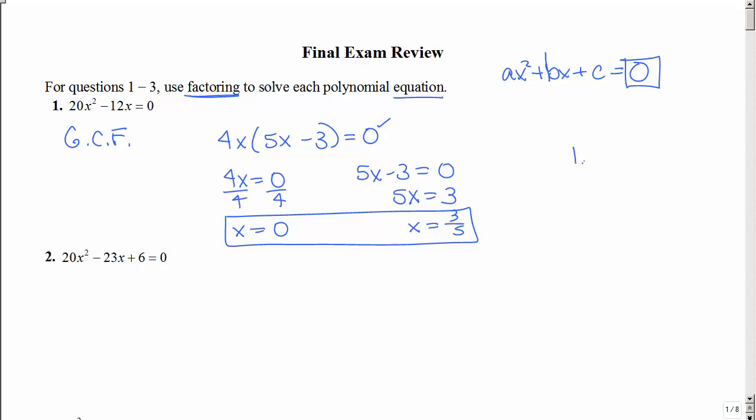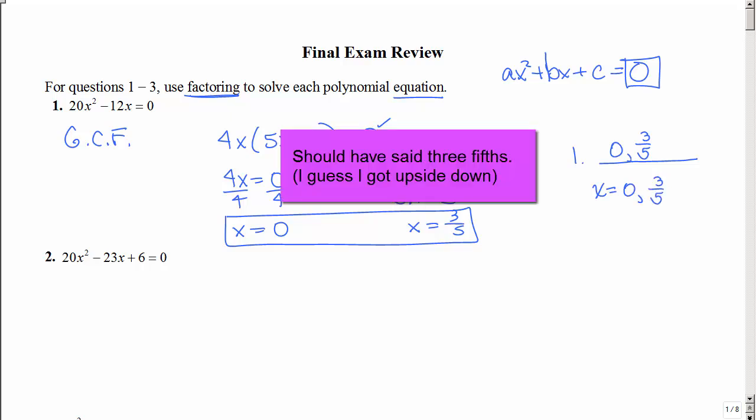On the exam, you will have an answer blank out to the side and you certainly want to make sure that your answers go in that answer blank. You could just list them or you could say x equals zero and x equals five thirds.